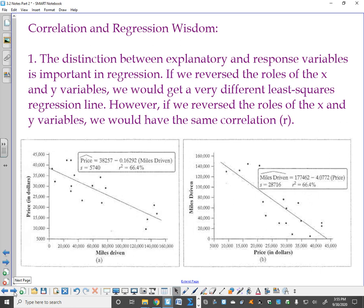So to wrap this chapter up, we're going to talk just about some facts, some correlation and regression wisdom. Lots of great multiple choice questions can come from the next 10 minutes or so. The distinction between explanatory and response variables is important in regression. If we reverse the roles of the x and y variables, we would get a very different least squares regression line. However, if we reverse the roles of the x and y variables, your correlation coefficient would not change.